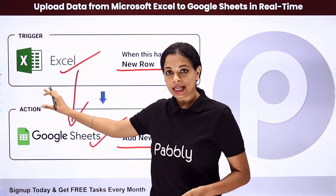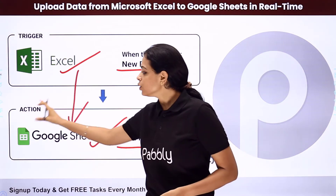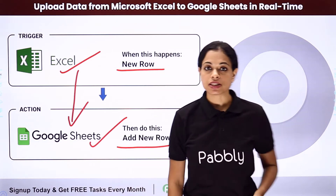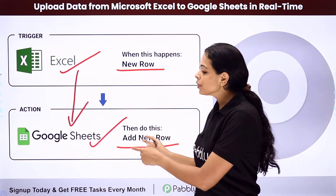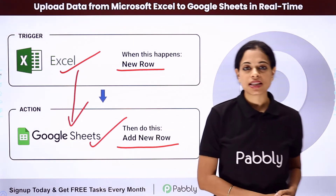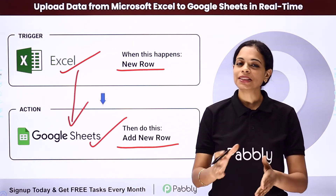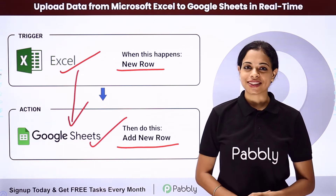Your trigger application would be Excel and your action application would be Google Sheets. To show you how you can do this yourself, let me take you to my screen.